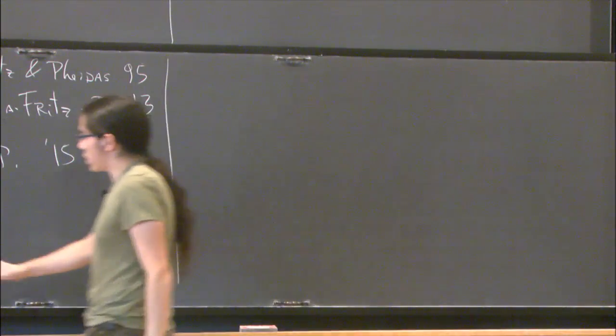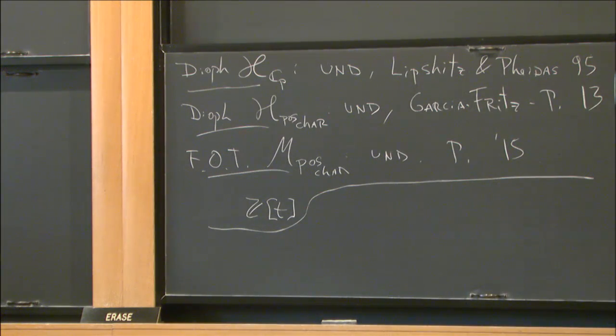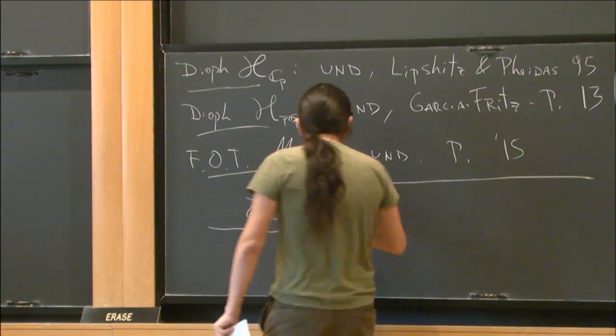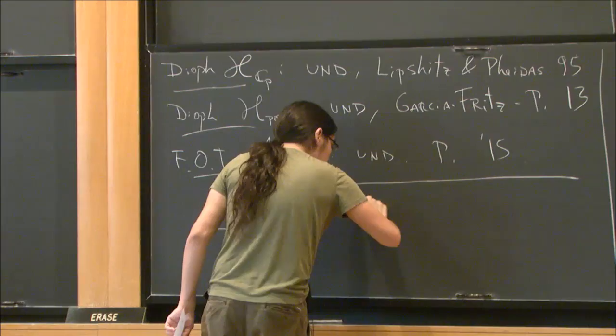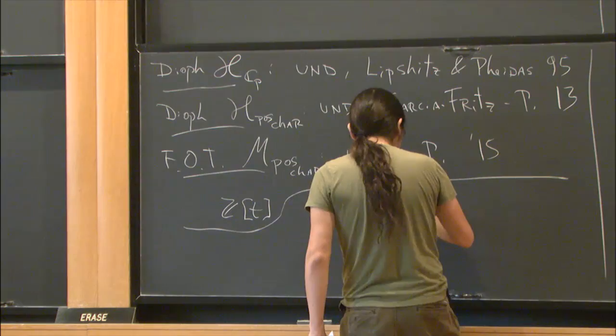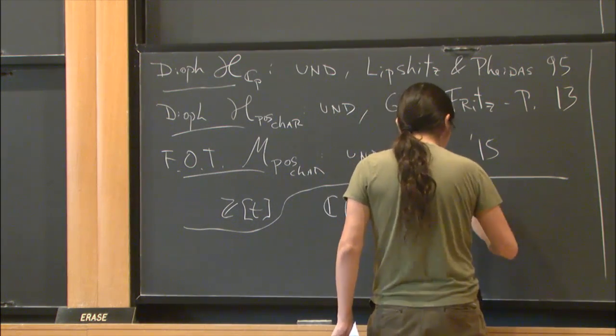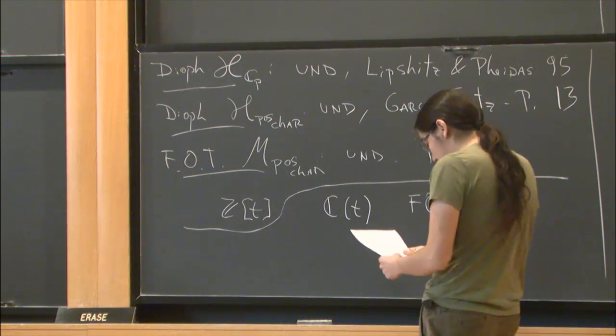And I want to mention here that in the algebraic case, if you don't care about the analytic situation, in the algebraic case much more is known. For rational functions over the complex numbers, we don't even know the first-order theory. So even that is unknown. As of today, if somebody tells me I prove that this is decidable, I don't really have an argument against that.